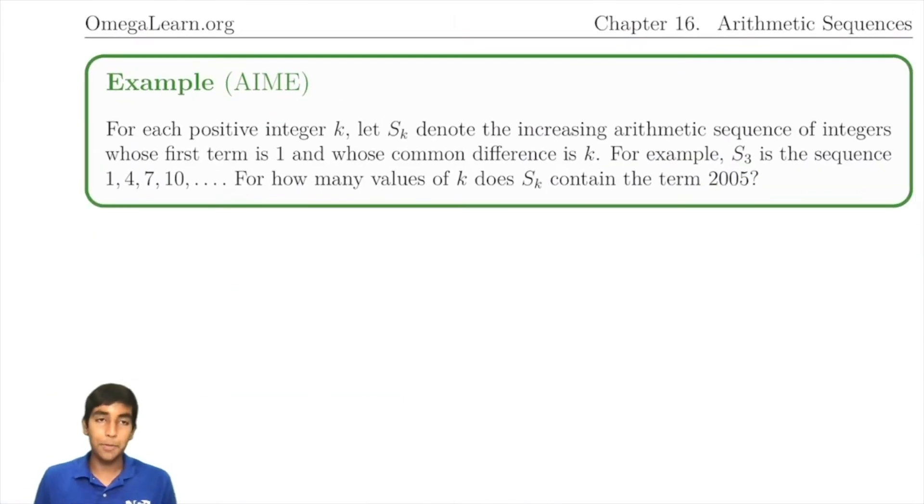Now let's take a look at an example. For each positive integer k, let s_k denote the increasing arithmetic sequence of integers whose first term is 1 and whose common difference is k. For example, s_3 is the sequence 1, 4, 7, 10, and so on. We're always increasing by 3. So how can we get started? We're asked to find how many values can actually contain 2005.